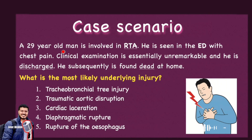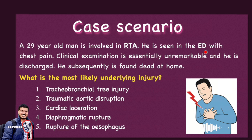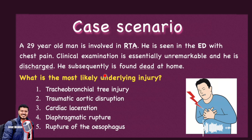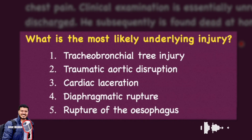A 20-year-old man is involved in a road traffic accident. He is seen in the emergency department with chest pain. Clinical examination is essentially unremarkable and he is discharged. He is subsequently found dead at home. What is the most likely underlying injury?